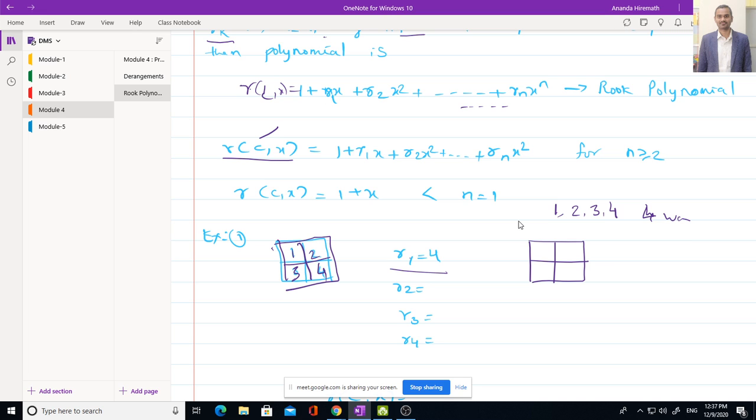One pawn. Now similarly can you guess what is R₂? R₂ is the number of 2 pawns. In how many ways we can keep or arrange these two pawns in this board? Can you tell me what will be R₂? Three. There are three ways. Do you think there are three ways? So let us see. Yes exactly two ways.